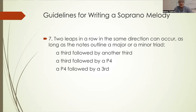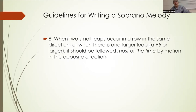Two consecutive leaps in the same direction can be: a major third followed by a minor third, a minor third followed by a major third, a third followed by a perfect fourth, or a perfect fourth followed by a third. These restrictions are just for two leaps in the same direction. If we have a leap up followed by a leap down, we can use many more combinations. When there are two small leaps in a row in the same direction, or when there is a larger leap of a perfect fifth or larger, it should be followed most of the time by motion in the opposite direction — compensating for the large leap.